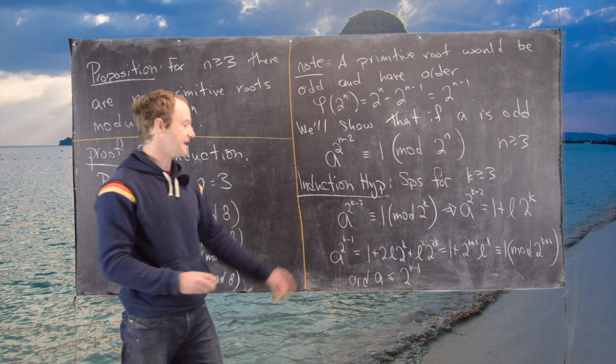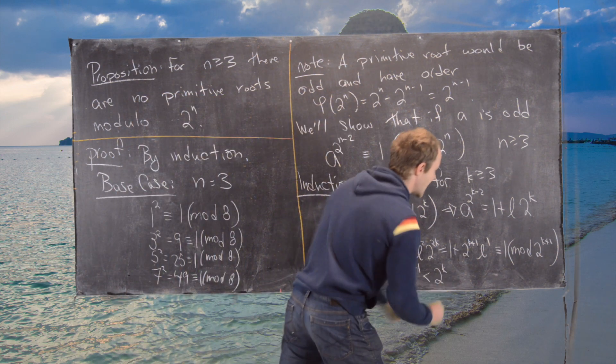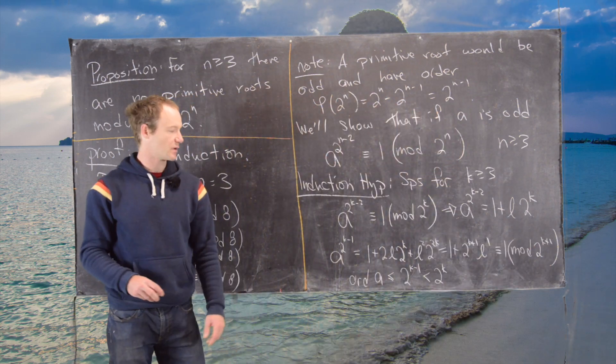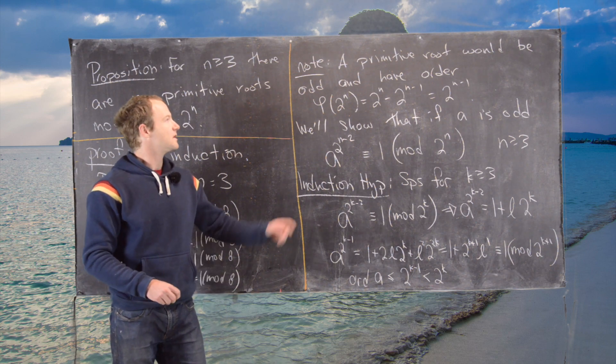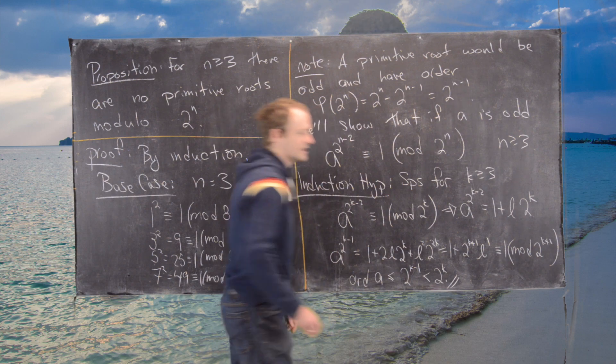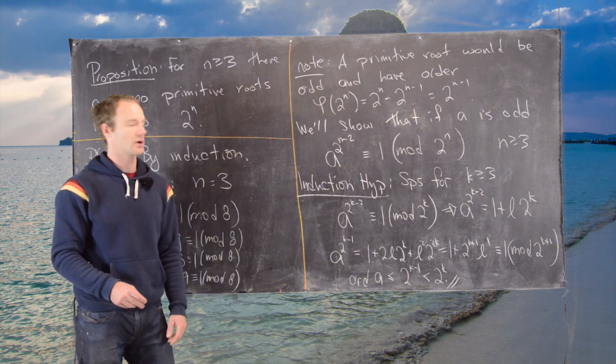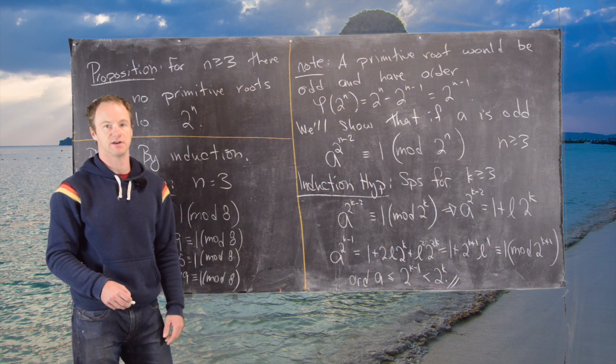But what we need it to be is this is strictly less than 2 to the k, but since we're working modulo 2 to the k plus 1, that means that a is not a primitive root. So that finishes this proof. We'll continue along this string of results working up towards classifying numbers which have primitive roots and ones that don't.